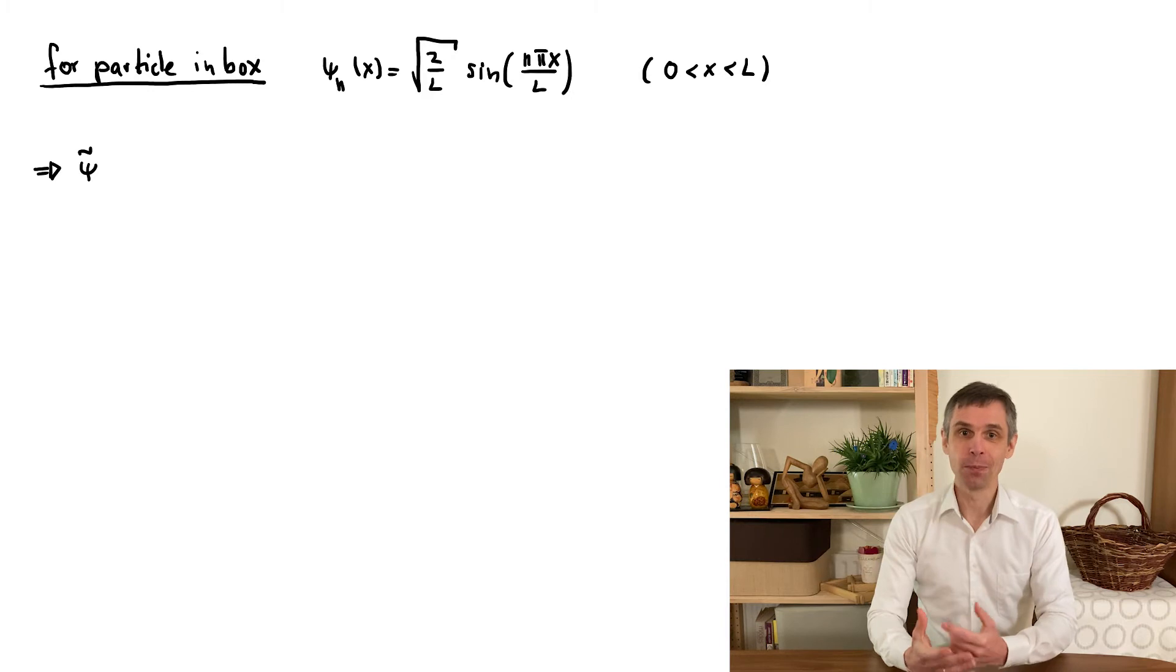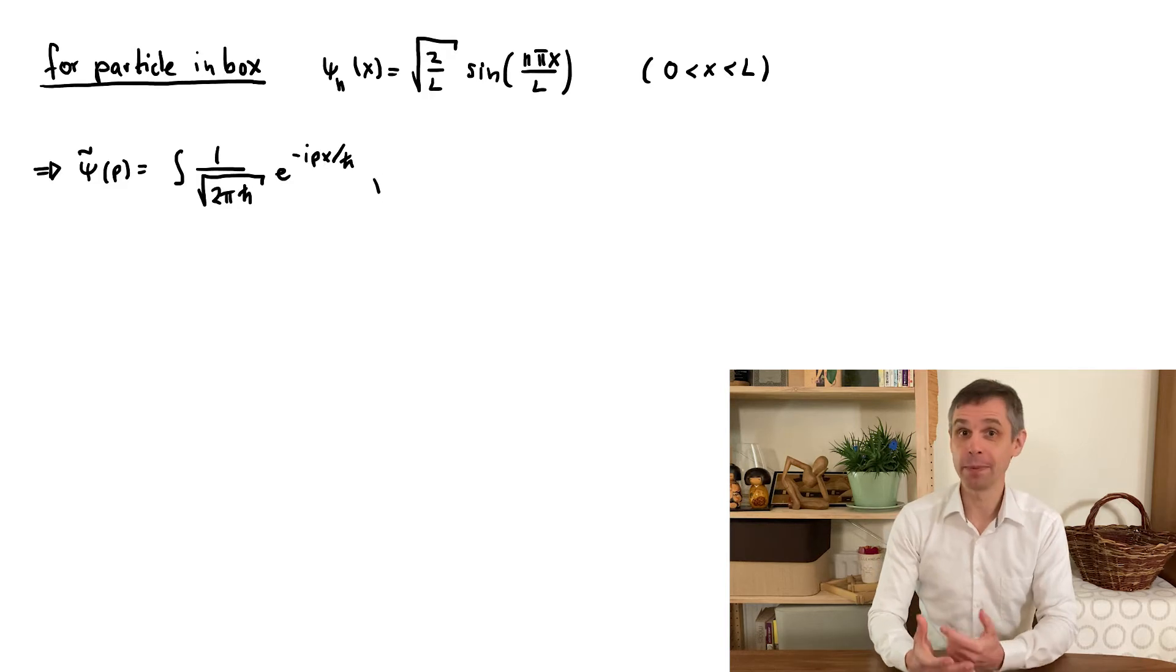Okay, so I mentioned that we can use this probability density to directly uncover a new phenomenon. For this we work this out for the energy eigenstates of the particle in the box. We first work out the momentum wave function by applying the general formula.